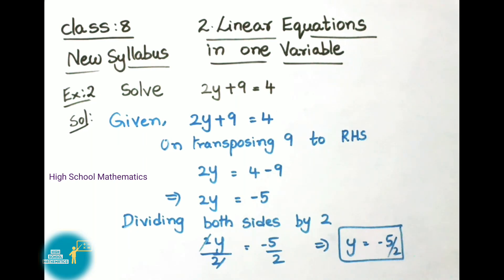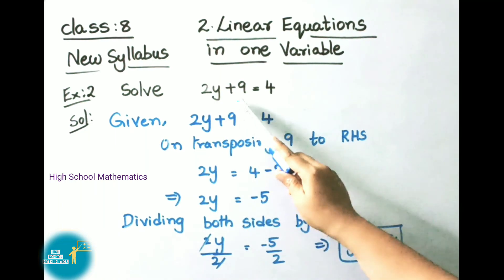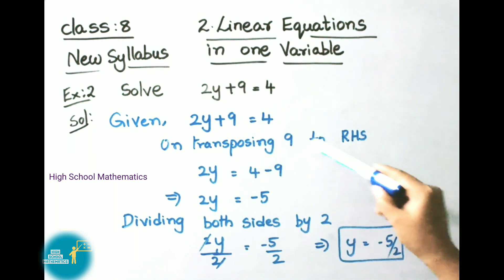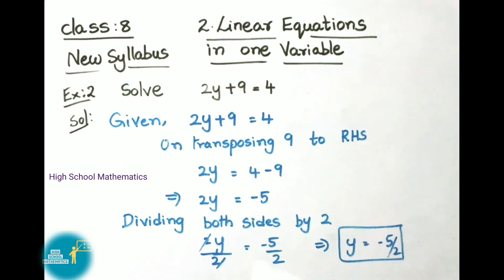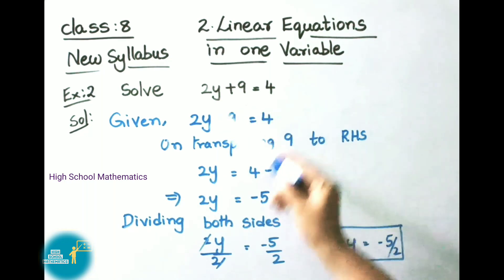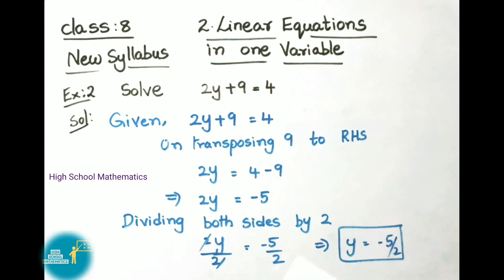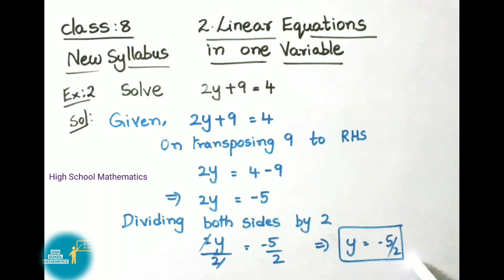In 7th class we learnt about linear equations using both transposing and without transposing methods. The first sum we did without transposing; the second sum we did by transposing. On transposing, a plus value becomes minus or a minus value becomes plus. Also on transposing, multiplication becomes division or division becomes multiplication. So here plus 9 on transposing became minus 9, and the multiplication by 2 on transposing becomes division by 2. Either method can be used to solve linear equations.